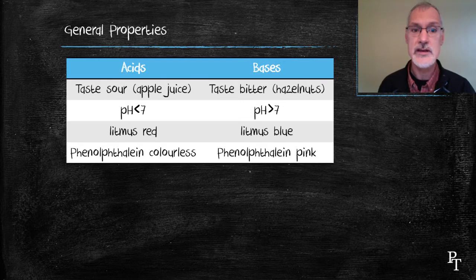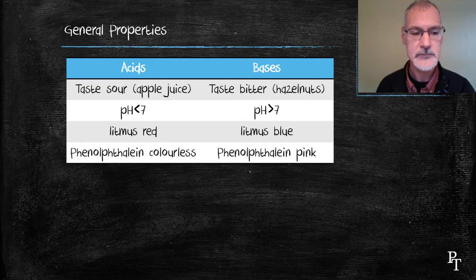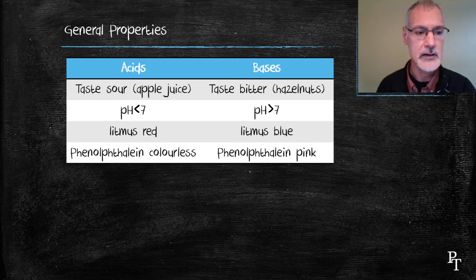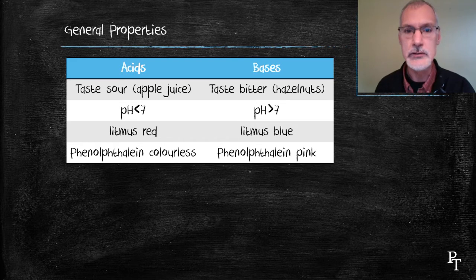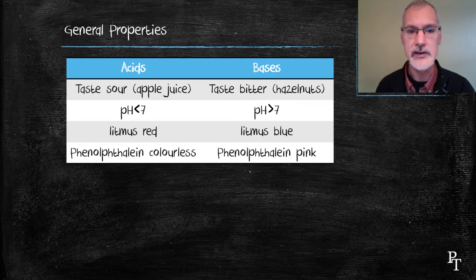I should make note at this point that that though is at 25 degrees Celsius. That pH value will change with temperature. Also the behavior of acids and bases can be based on how they behave with certain plant or chemical dyes. Litmus, a plant dye turns red in the presence of acids and blue in the presence of bases. Similarly, a chemical indicator phenolphthalein goes from colorless to pink in a basic condition.